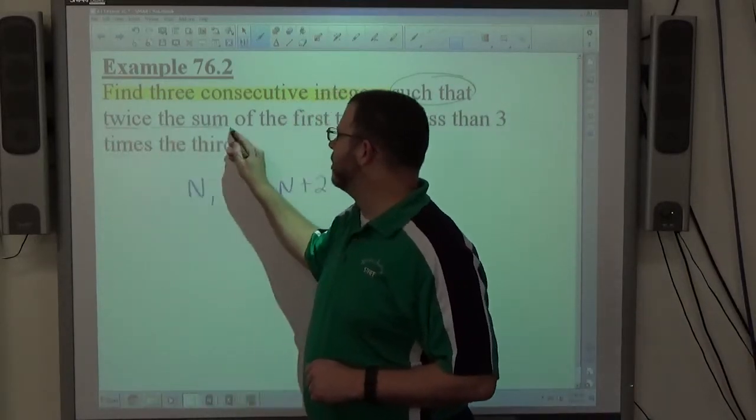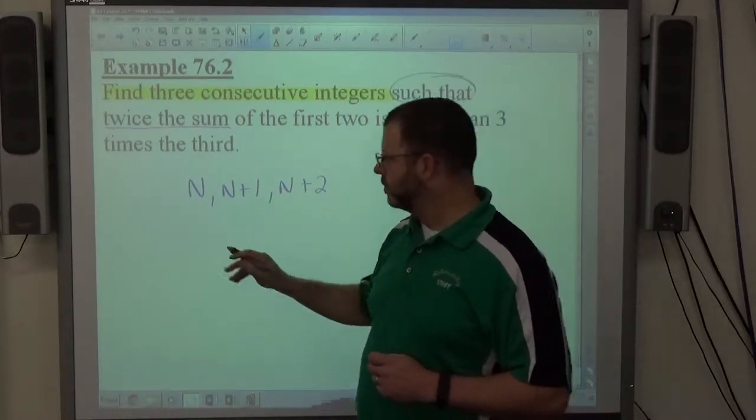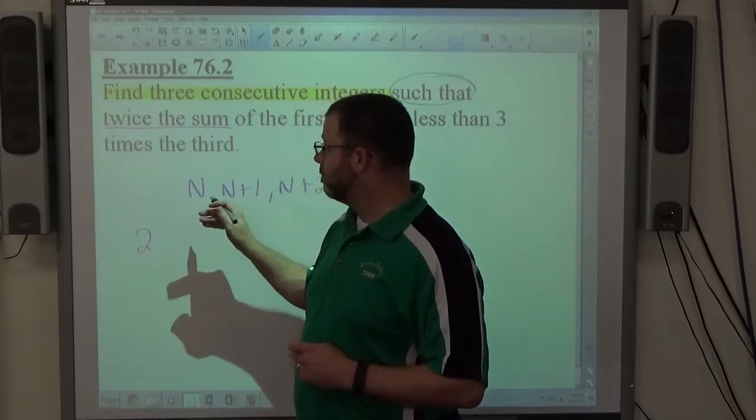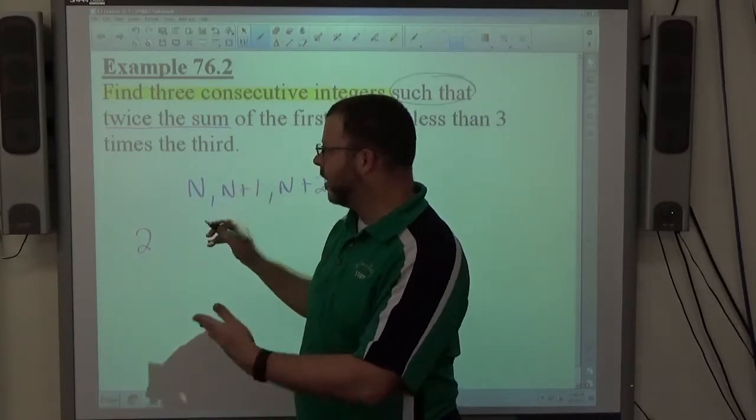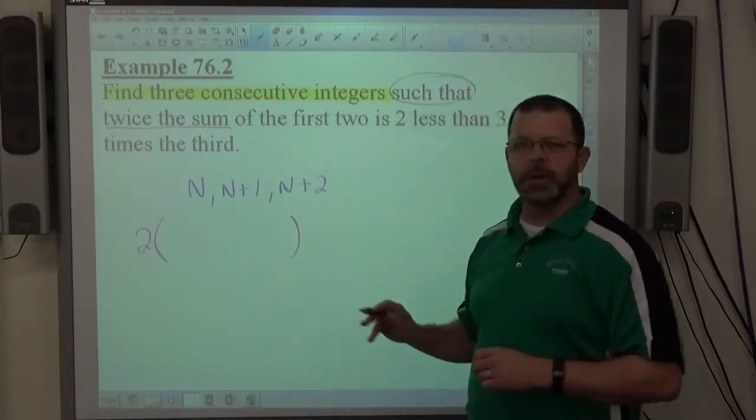Twice the sum means to multiply 2 times what? Two times the sum, right? And to multiply 2 times the sum requires the use of parentheses. So be careful.